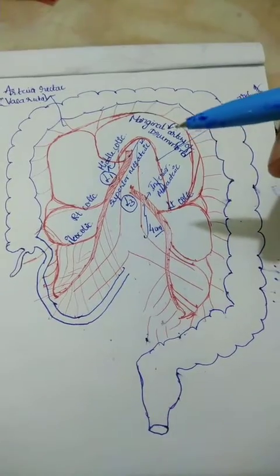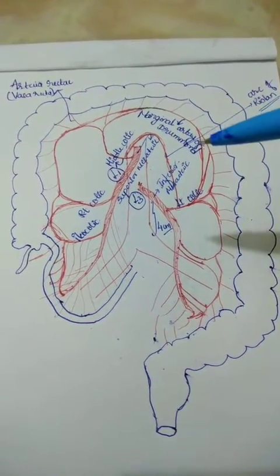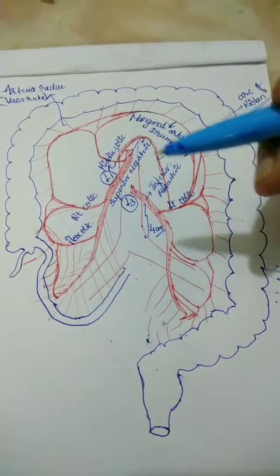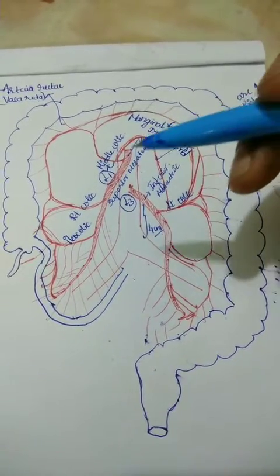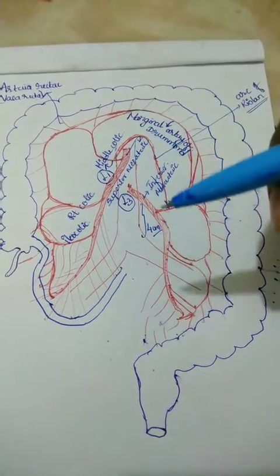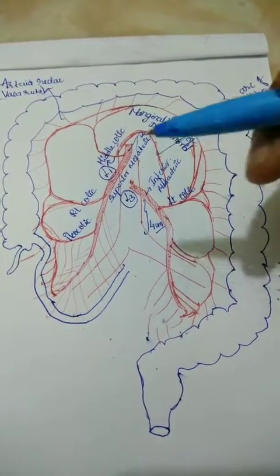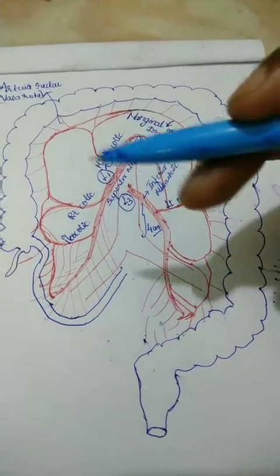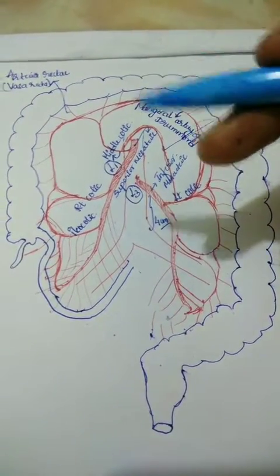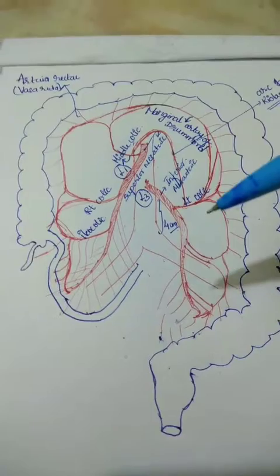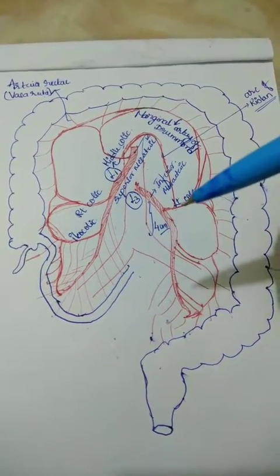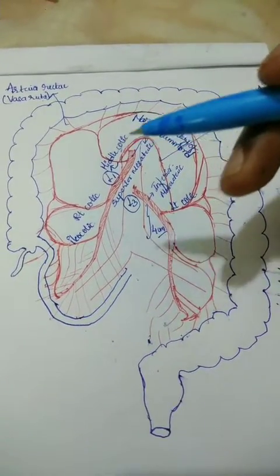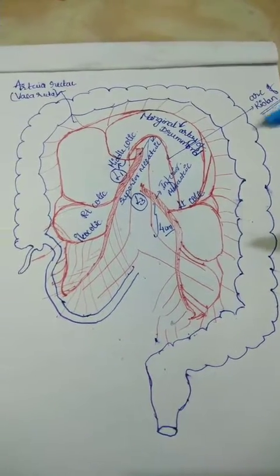This marginal artery is named the marginal artery of Drummond. There can also be an inner arched artery which connects the middle colic to the left colic — the middle colic being a branch of the superior mesenteric artery and the left colic being a branch of the inferior mesenteric artery. This connecting vessel is called the arch of Riolan.